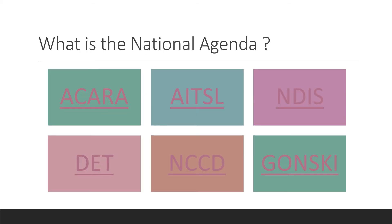In the tutorial — the workshop this week — we're going to explore these six elements of the national agenda. If you want to go to the PDF for this, you can click on all of those links and get a feel for what they are.